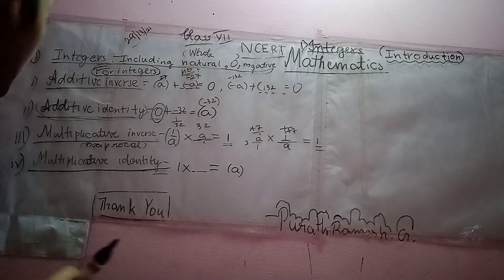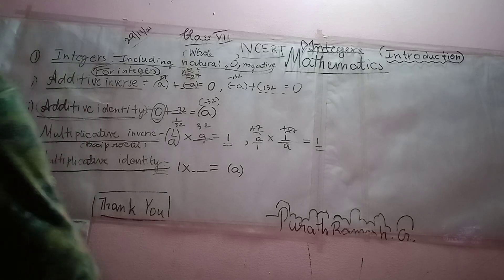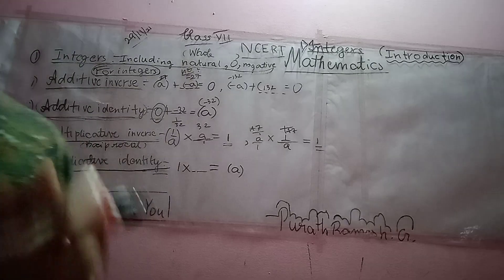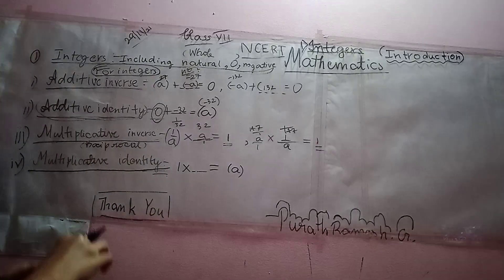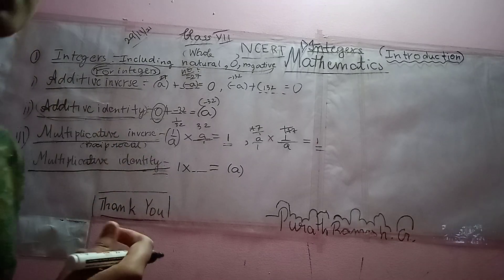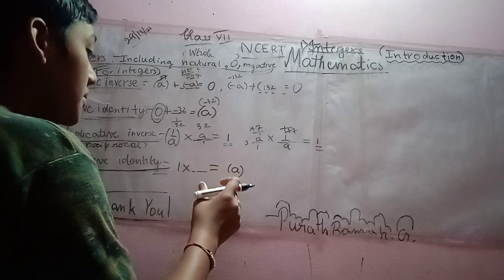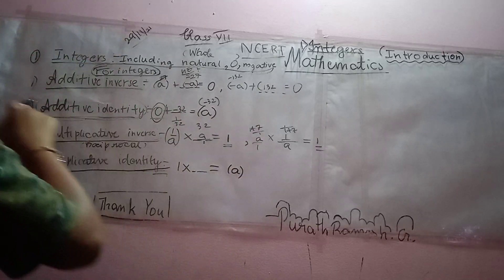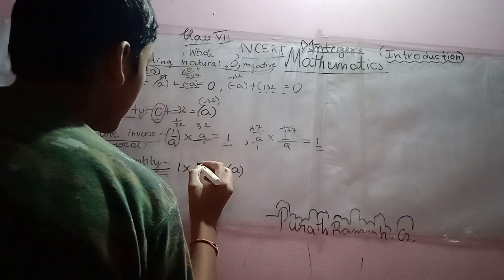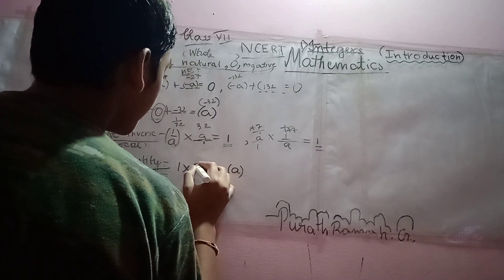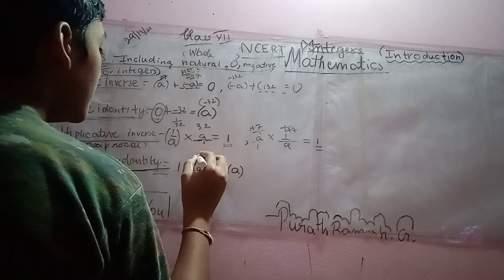Next, our fourth property or the basic property of integers is multiplicative identity. What is multiplicative identity for integers? Multiplicative identity is a number, if you multiply with any number, we should get back the same number as in additive identity. So, 1 into, let me take as A. A will be 132.